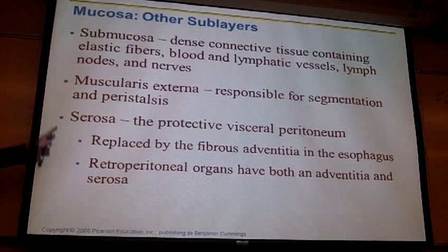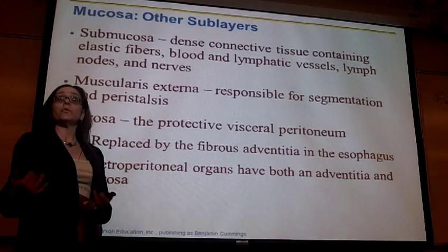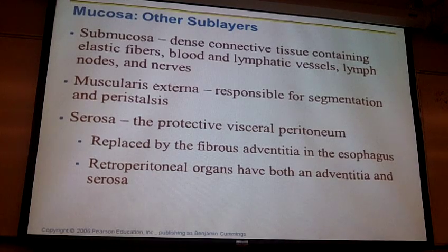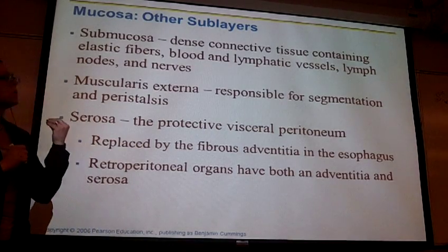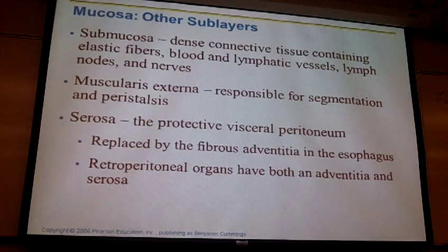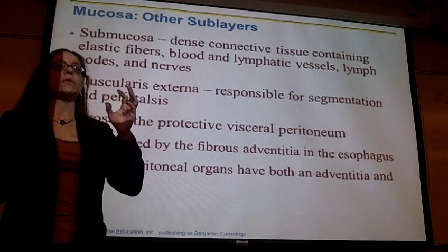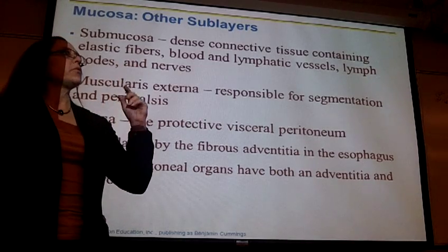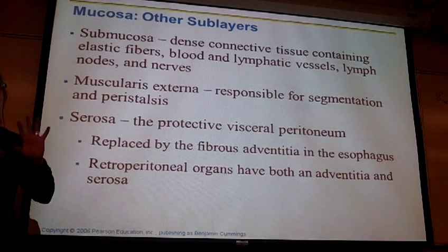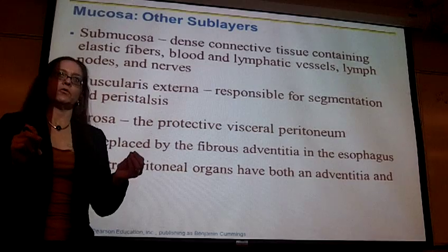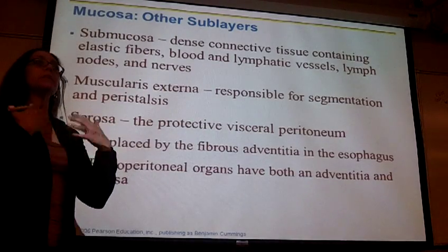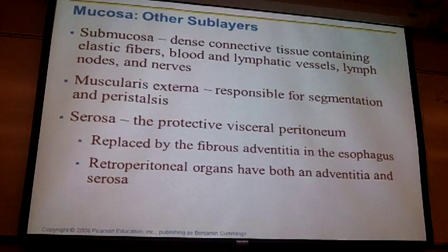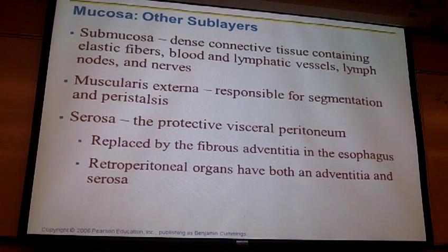We're going to talk a lot about these tunics and show how to identify one versus the other. When thinking about the digestive system, you want to be comfortable saying: what is special about the mucosal tunic in the stomach versus the small intestine? How do those adaptations allow those organs to do a particular job? How can I tell one from the other based on a slide? We'll look at the different tunics and determine if they're similar or different from one organ to another.